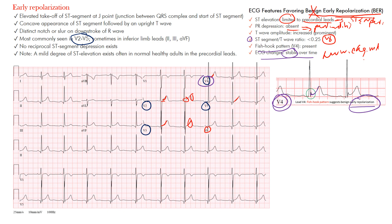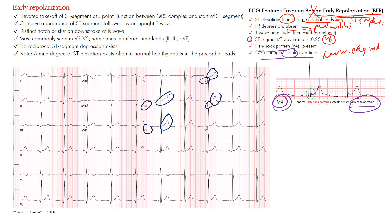This is a great example of early repolarization on an EKG — elevation that is often benign, though some have now associated this pattern with sudden cardiac death. Focus on the precordial leads where you see concave upward changes and elevation at the J point.